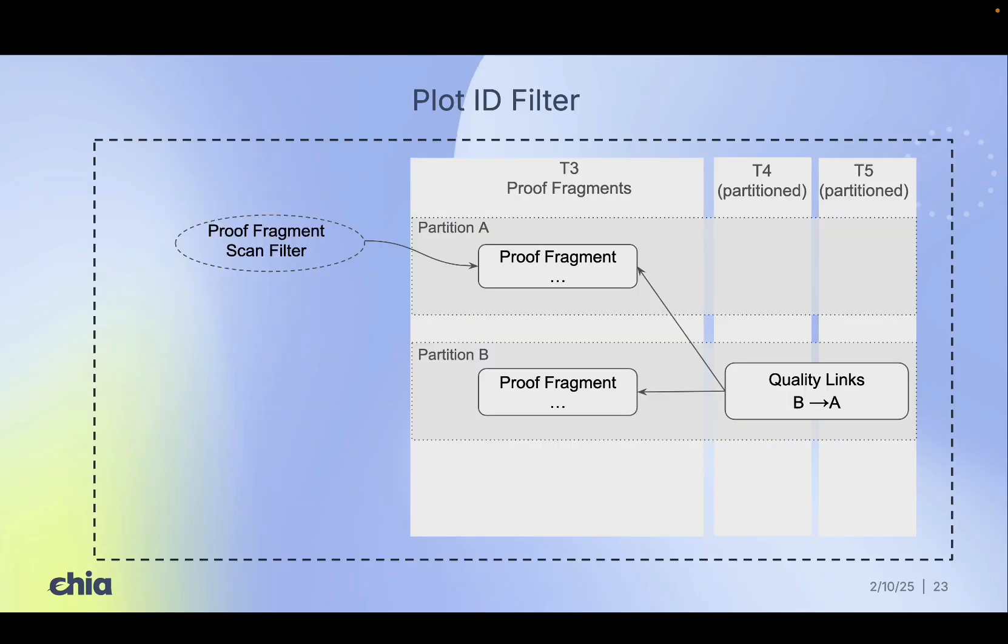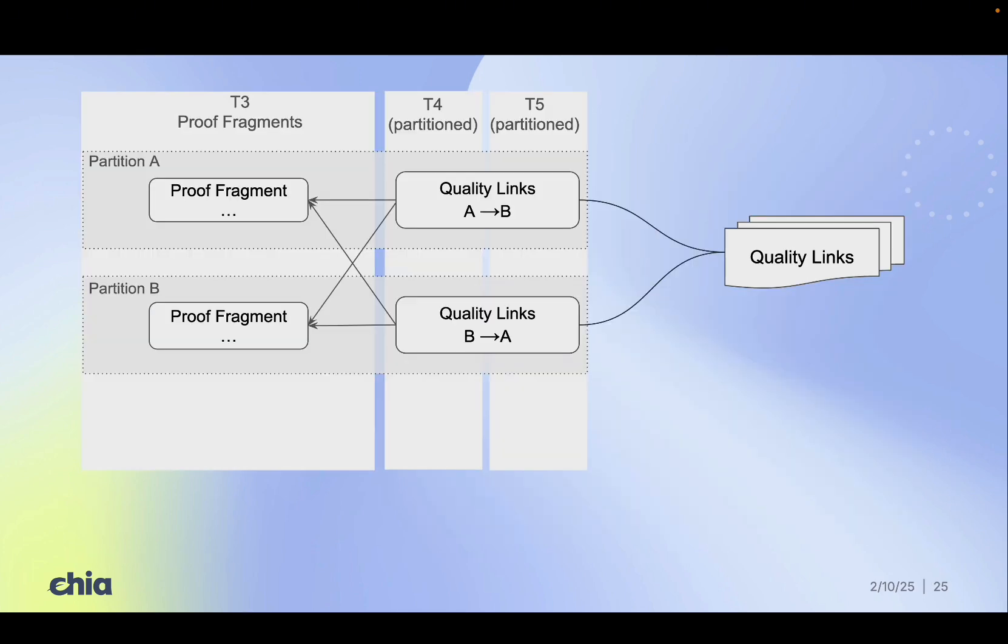Between any two linked partitions, we collect all quality links. So partition A and partition B contribute their own sets of quality links, and many of them cross into each other. The full combined set of quality links becomes the building blocks for the next phase.